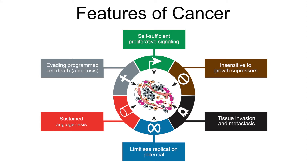The fifth is growth of new blood vessels, or angiogenesis. Tumor cells grow very quickly and divide very rapidly, so they require a lot of nutrients and also produce a lot of waste that needs to be eliminated. This requires the growth of new blood vessels to support the tumor cells.